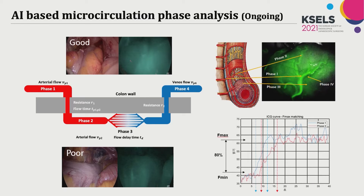We also performed AI-based microcirculation phase analysis. We separated the microcirculation phase into arterial, capillary, and venous phases, and compared the delayed enhancement pattern of the arterial phase and capillary phase to predict the pathologic status of the colon wall.